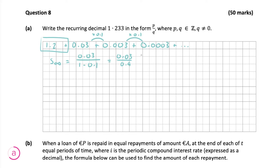We don't want any decimals in this fraction, so we're going to multiply everything by 100 to get 3 over 90, which is the same as 1 over 30. Now we're going to go back and add that sum to infinity to the 1.2 we had at the start, so it's going to be 1.2 plus 1 over 30. Since 1.2 is also equal to 36 over 30...